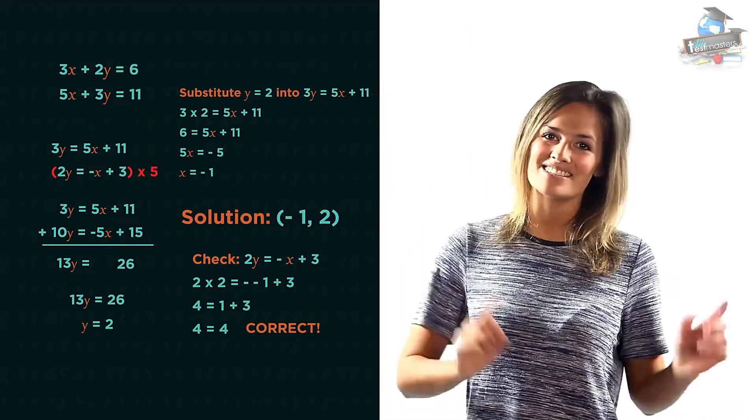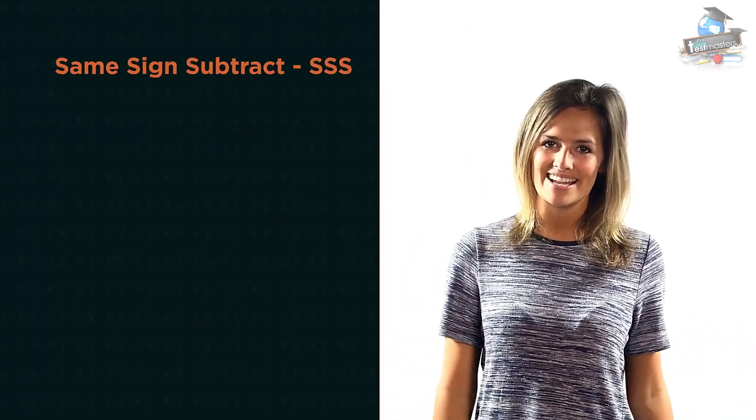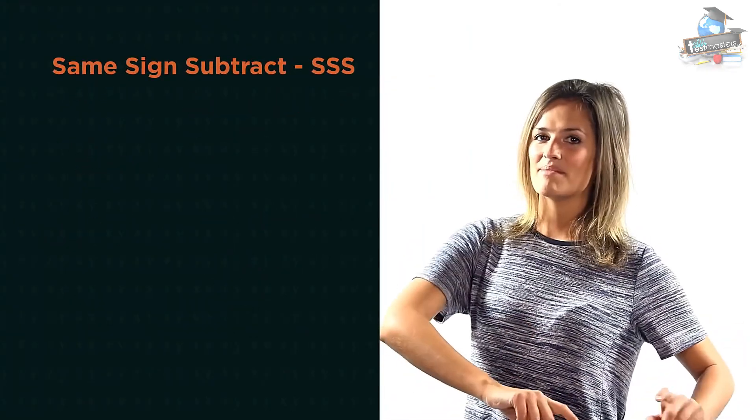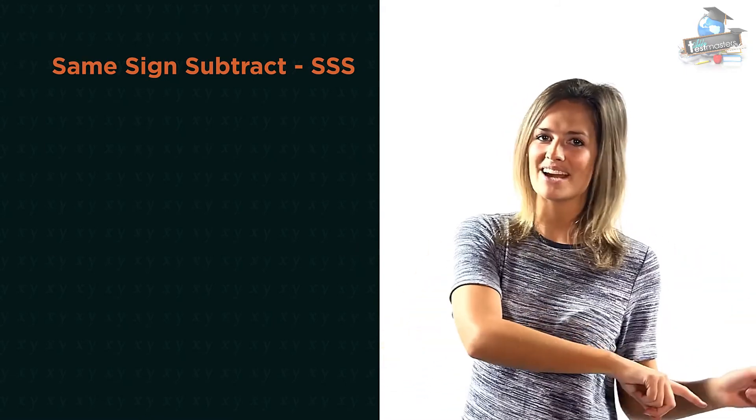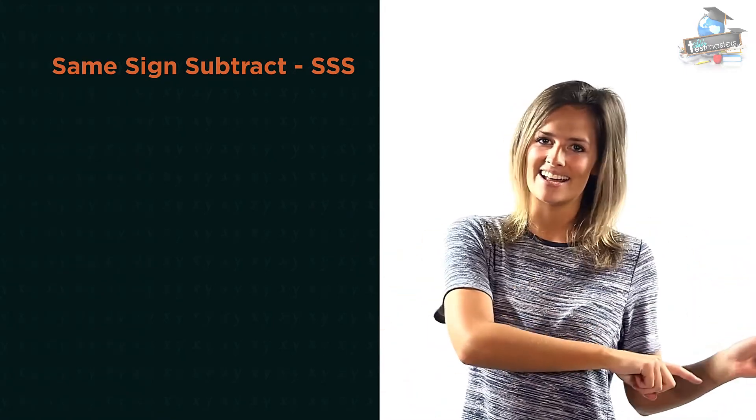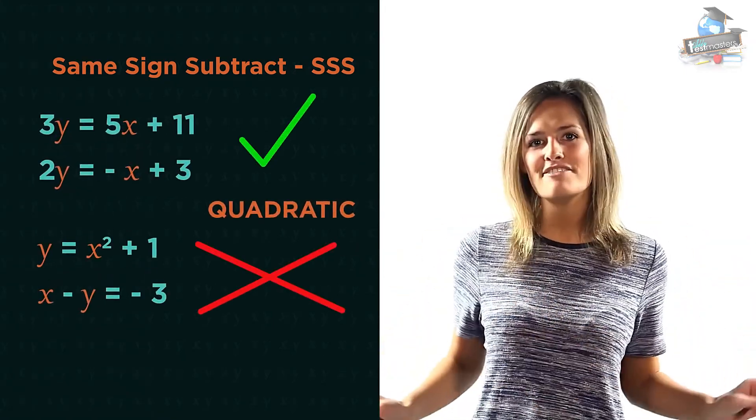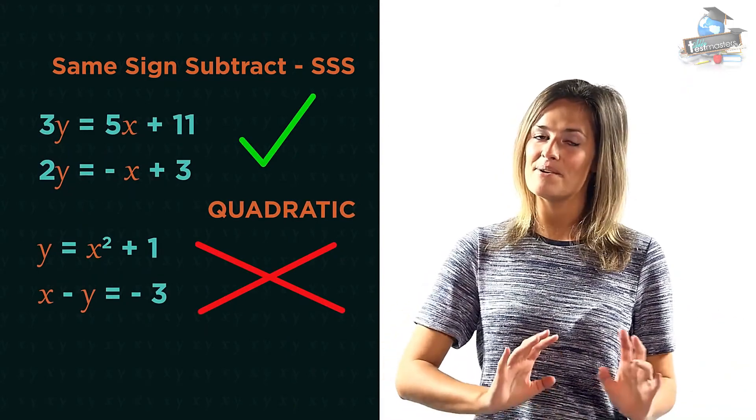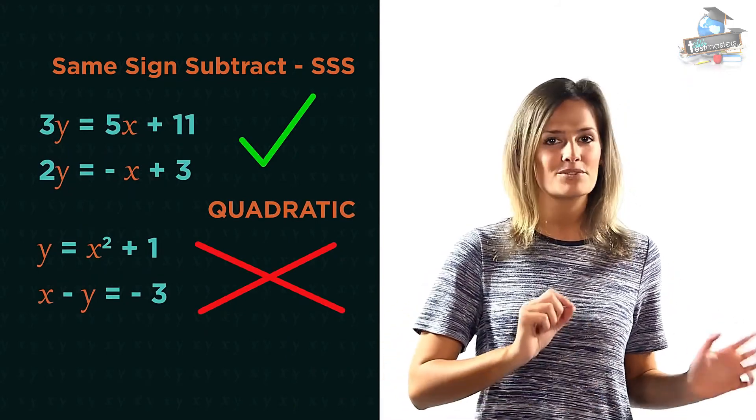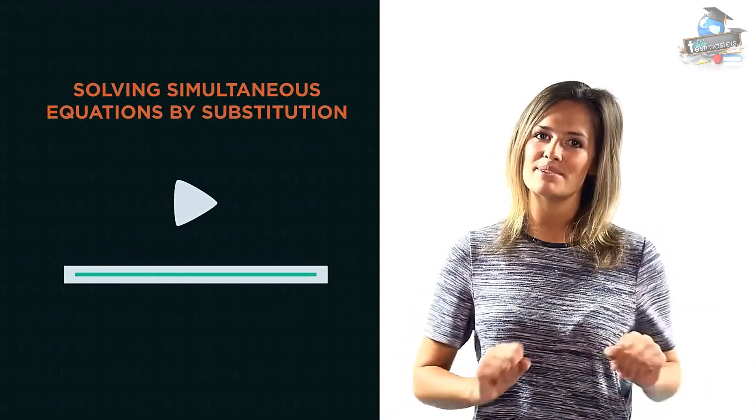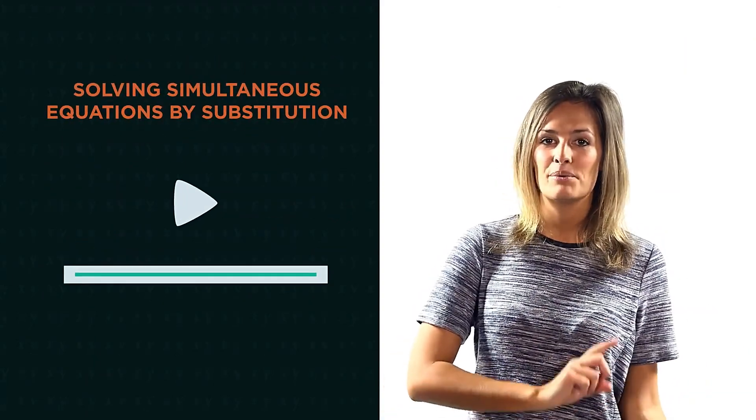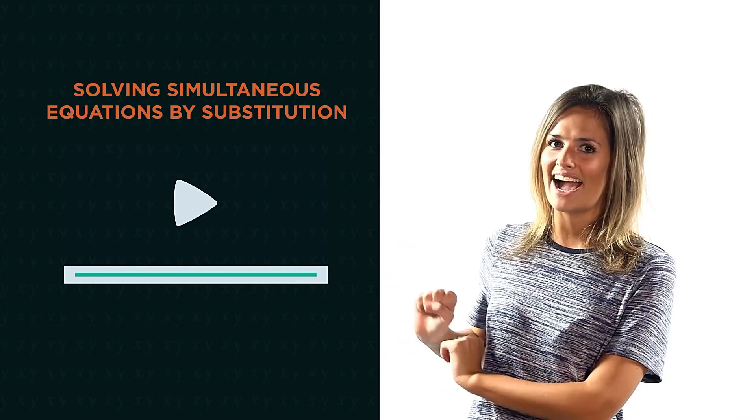So there we have solving simultaneous equations by elimination. You just need to remember same sign subtract, SSS. This works perfectly for linear equations but won't work if there's a quadratic involved. For that we have to use substitution. Watch this video to discover how.